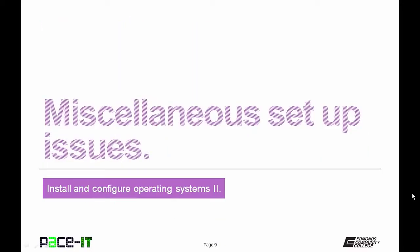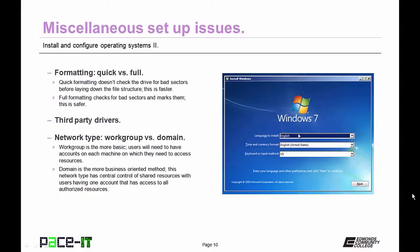Now let's talk about miscellaneous setup issues. First, formatting the hard drive — quick format versus full format. In a quick format, the system does not check for bad sectors before laying down the file structure; it's faster. A full format does check for bad sectors and marks them so files aren't placed there; it's slower but much safer.